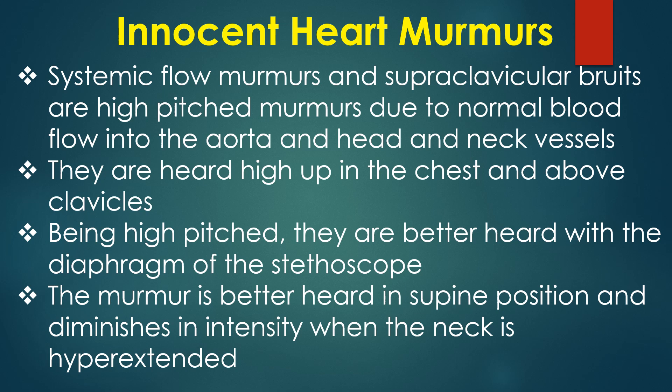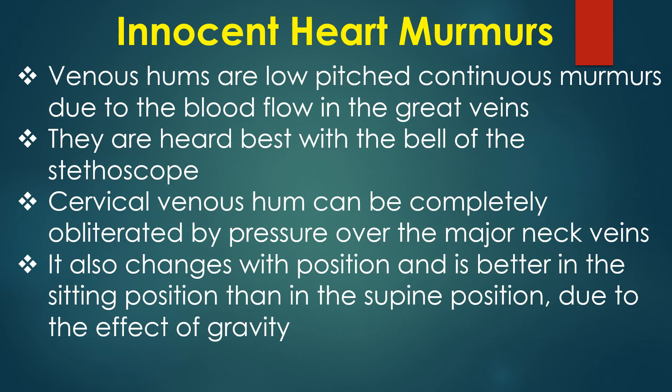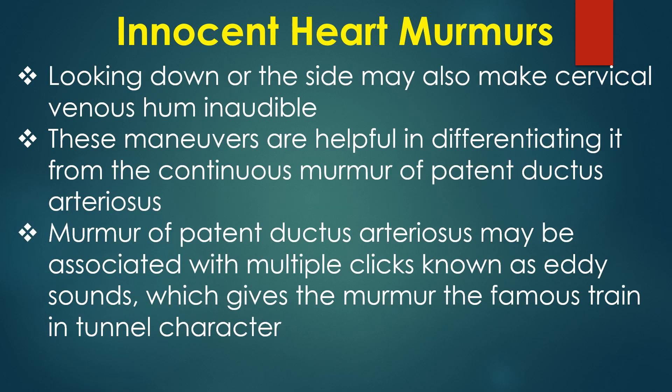The supraclavicular bruit is better heard in the supine position and diminishes when the neck is hyperextended. Venous hums are low-pitched continuous murmurs due to blood flow in the great veins, heard best with the bell of the stethoscope. Cervical venous hum can be completely obliterated by pressure over the major neck veins. It changes with position — better in the sitting position due to the effect of gravity — and may become inaudible when looking down or to the side. These manoeuvres are helpful in differentiating it from the continuous murmur of patent ductus arteriosus.